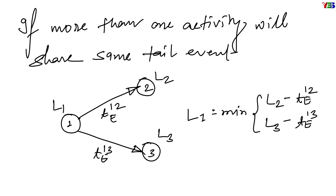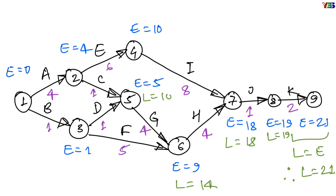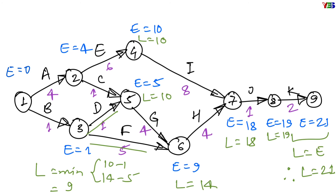Let us move to our network diagram. The first step is to compute the latest allowable time for the last event, which will be equal to the earliest possible time at that event. In this example, the last event is 9 for which earliest possible time is 21, so latest allowable time will also be 21. Now we will move backward one by one. L8 = 21 − 2 = 19. L7 = 19 − 1 = 18. L6 = 18 − 4 = 14. L5 = 14 − 4 = 10. L4 = 18 − 8 = 10. Now L3, which is a common tail event of activities D and F, so the value of L at this event will be the minimum from 10 − 1 and 14 − 5, which equals 9.